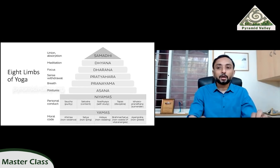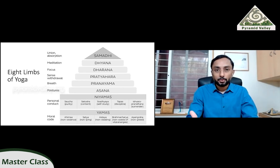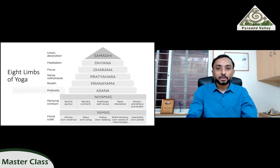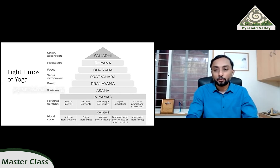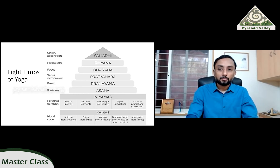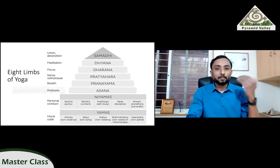Then we have niyamas — the observances. They are purity in thought, actions and words; contentment and gratitude — a lot of us do this gratitude practice, being thankful for everything. The other three are the elements we just talked about: Tapas, Svadhyaya, and Ishvara Pranidana. Svadhyaya is self-study — you continuously keep evaluating and being mindful of what you do. If there are still afflictions happening, you need to figure out why.